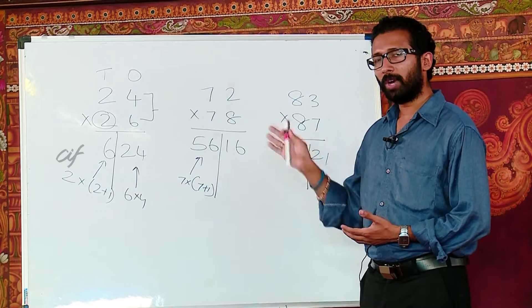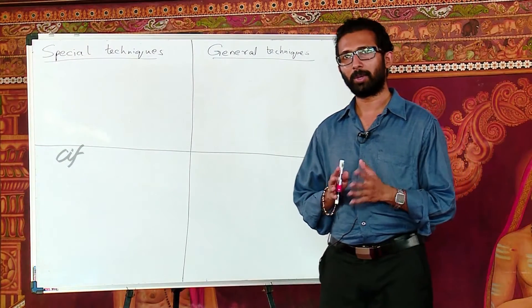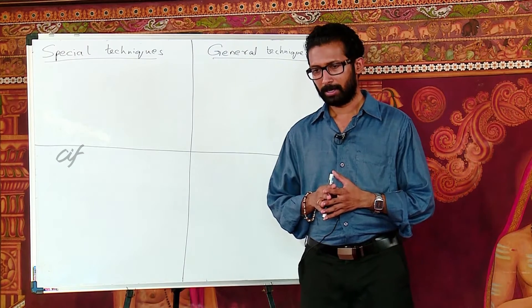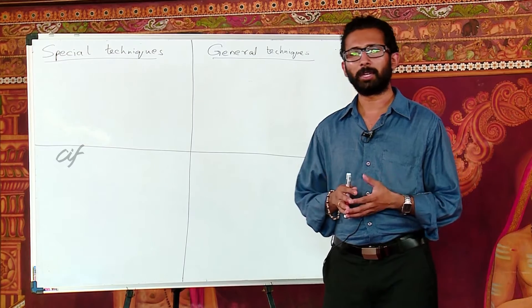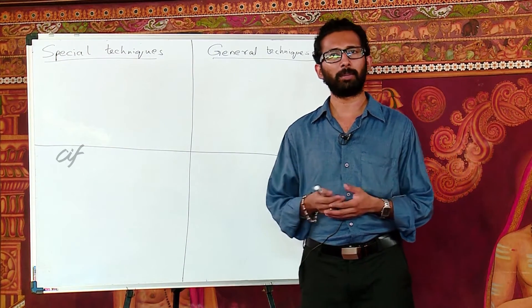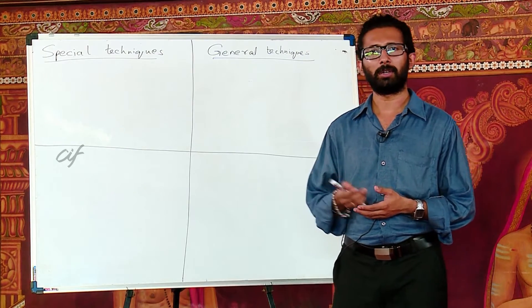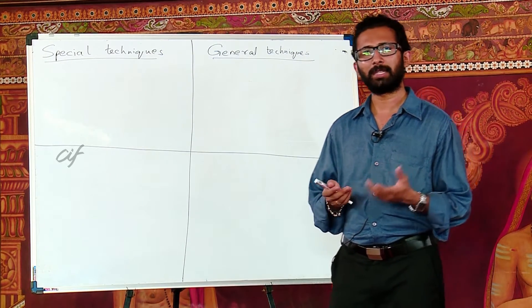So this is one of the special techniques in Vedic mathematics. Similar to that, we will look at one more technique. Say, if you have to square a number, say a big two-digit number, say 93 square or maybe you have to square a three-digit number, say a 105 square. So how can we do these calculations in less than 5 seconds?